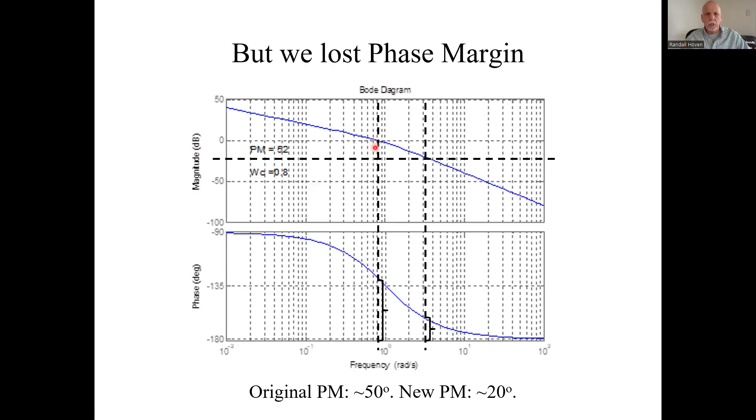Here's what it used to be. Now we're looking for where does the gain cross the zero dB. Go down there, and that was about, this gap was about, looking for the gap above minus 180, it was about 50 degrees. Now, if we change the gain to meet our steady state error spec, we're out over here. Phase margin is now only about 20 degrees.